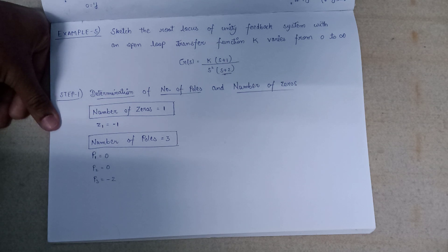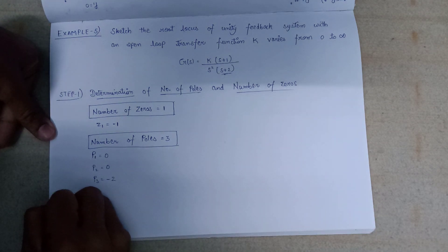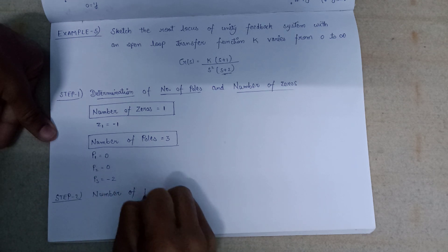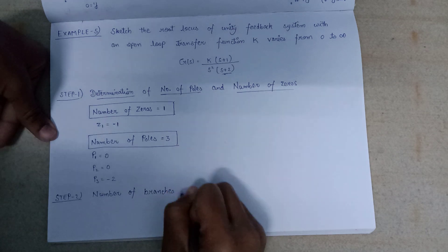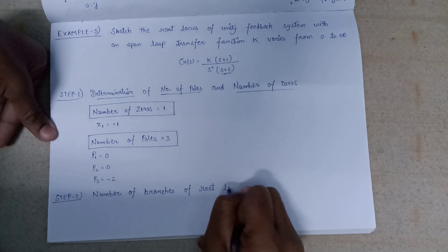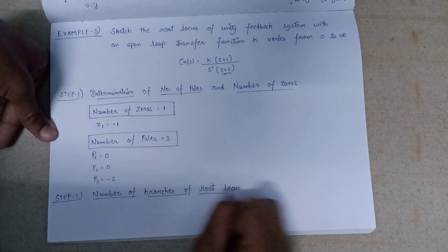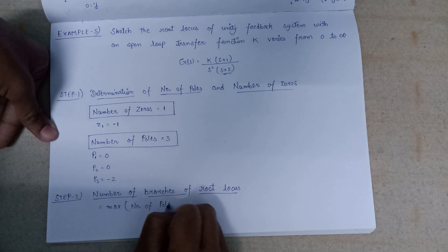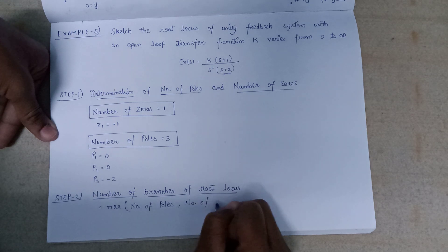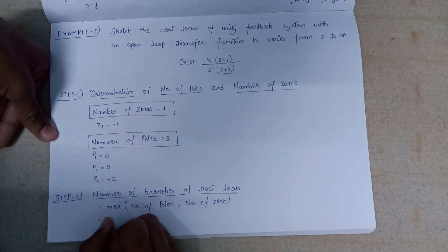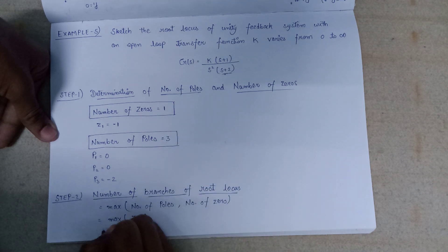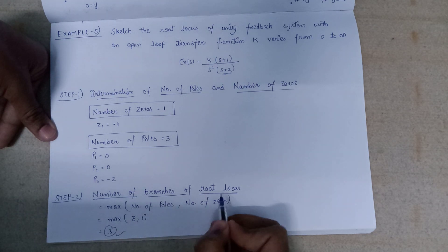Let's move on to the next step: calculation of the number of branches of the root locus. This is given by the maximum of the number of poles and number of zeros. The maximum of three and one is three, so the number of branches of the root locus is equal to three.